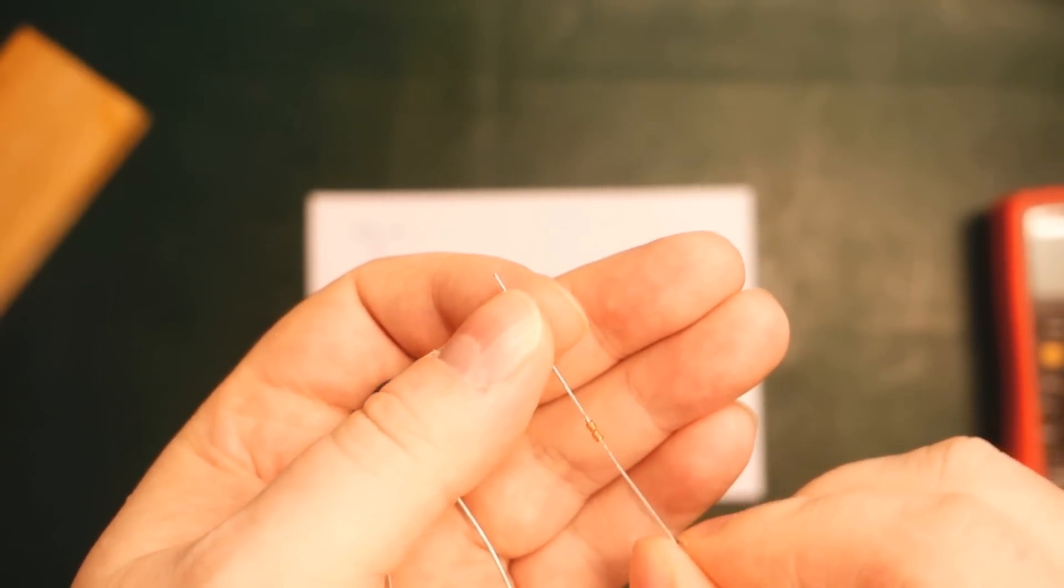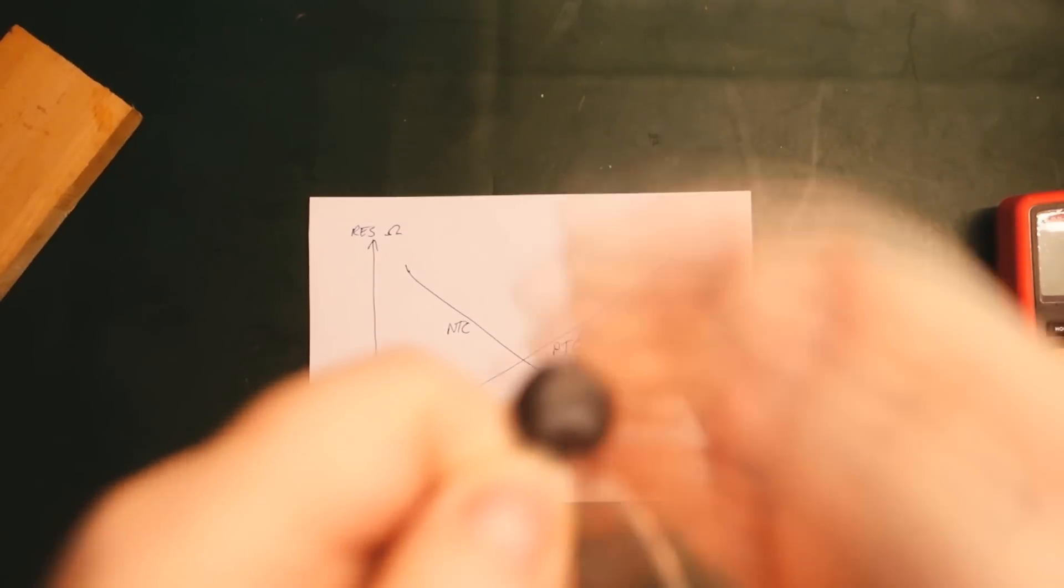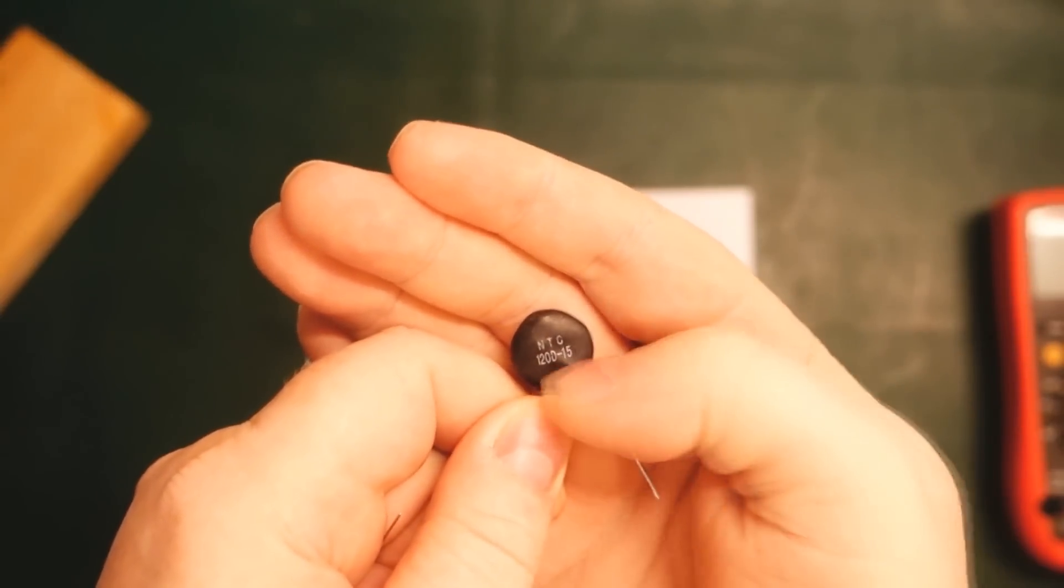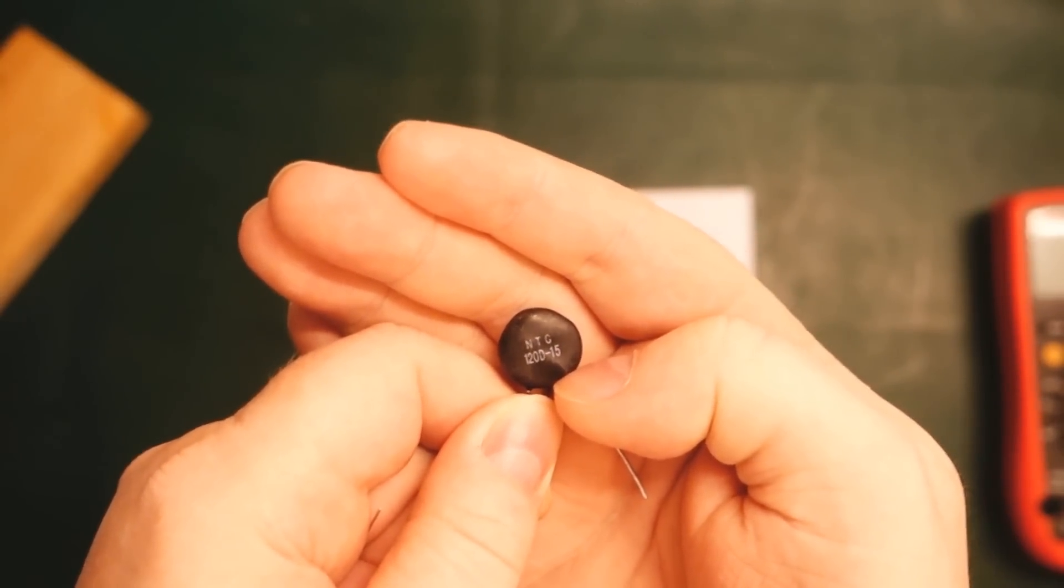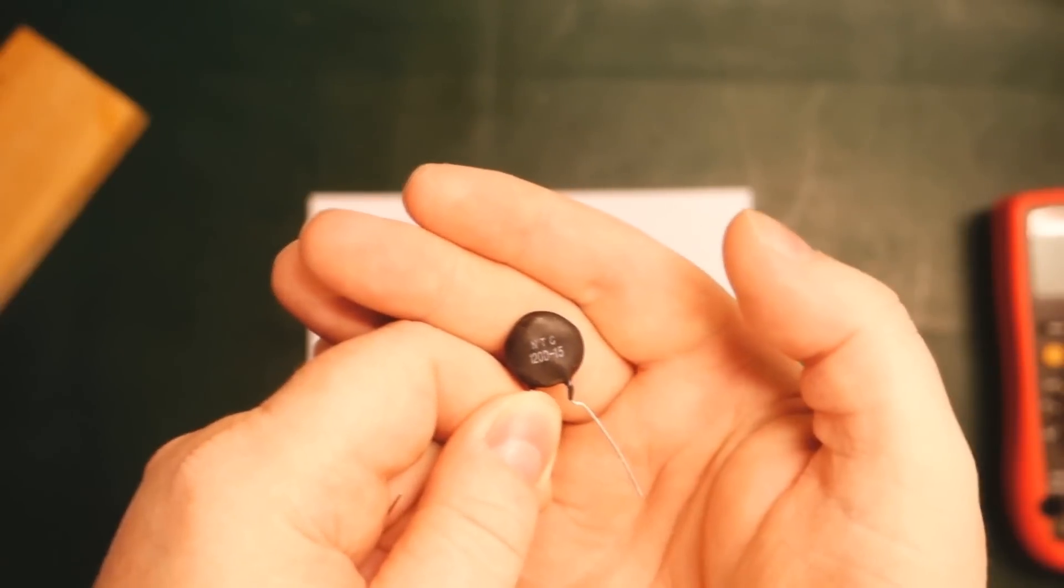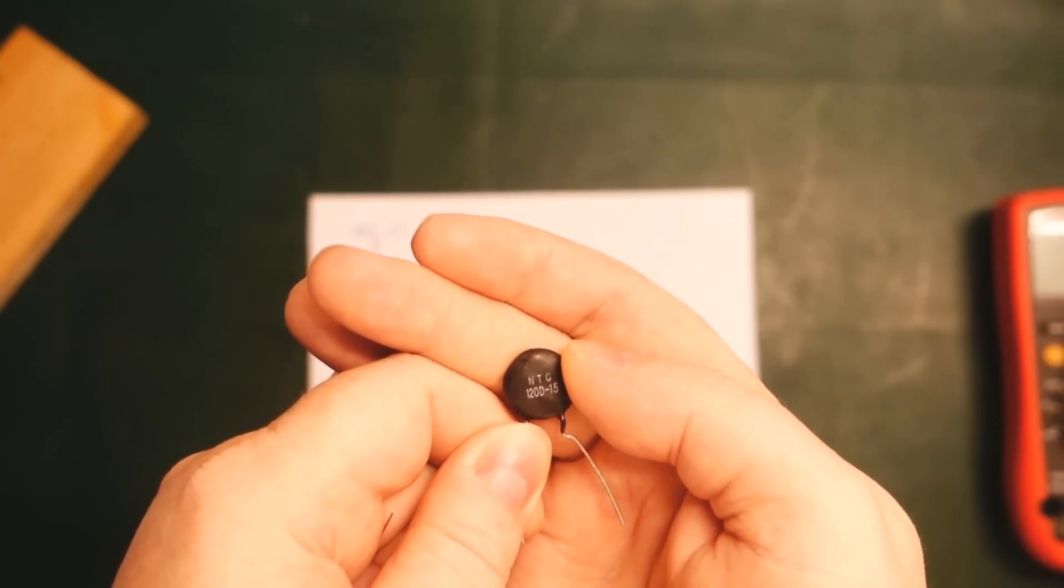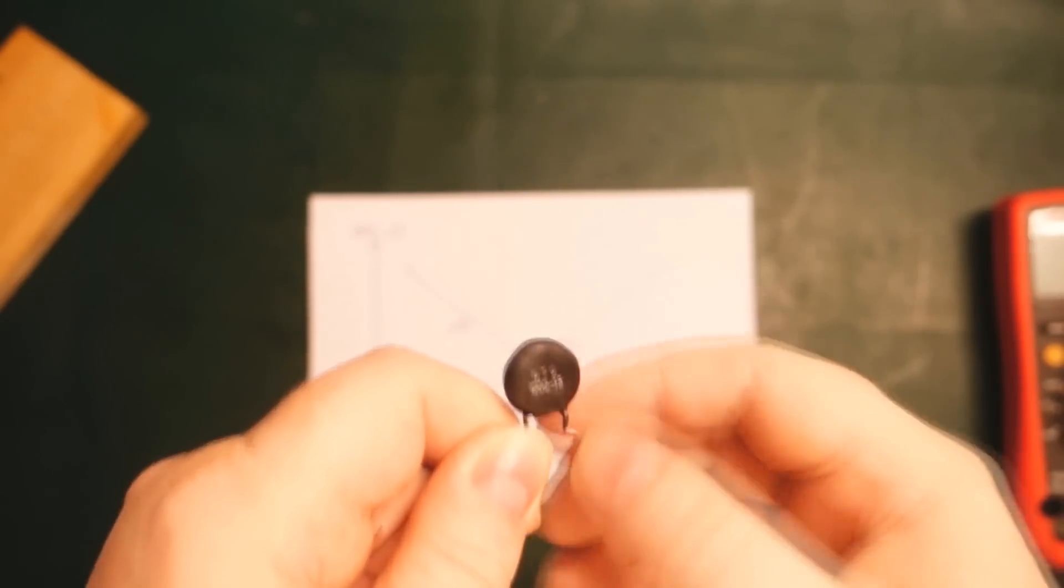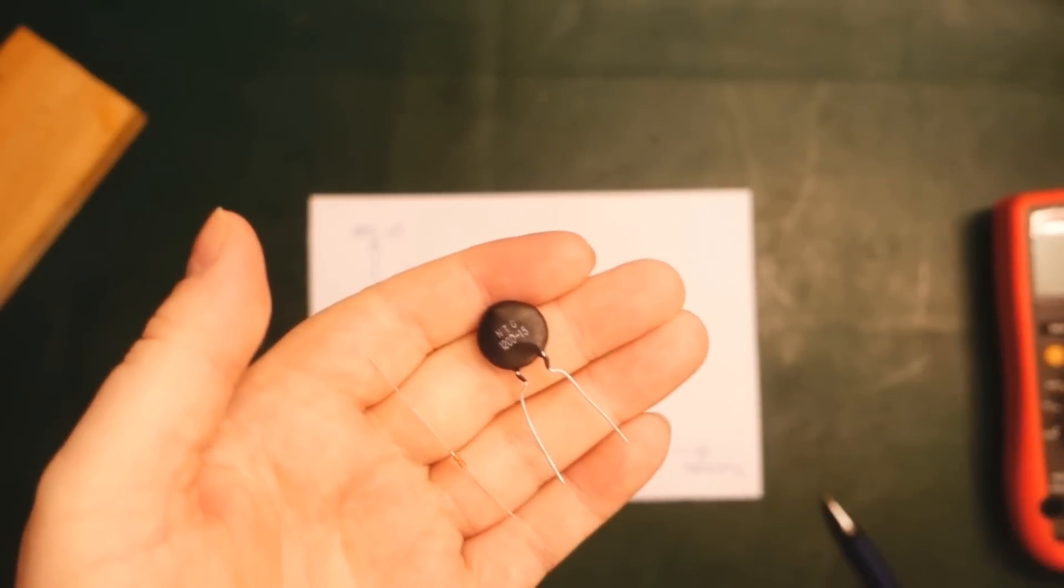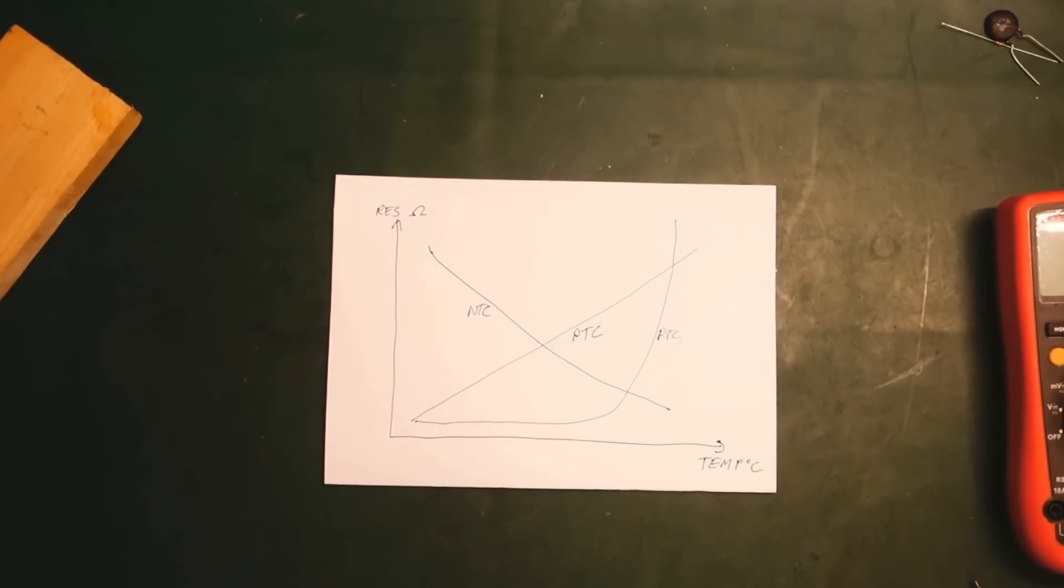You can get a reasonably accurate temperature measurement using one of these. This one here is typically used for limiting inrush current. For power supplies, if you have large capacitors for filtering, you can put one of these in series and the inrush current will be limited. The reason I want to talk about thermistors is because I had a small problem recently that was solved using thermistors. Let me do a quick demonstration.